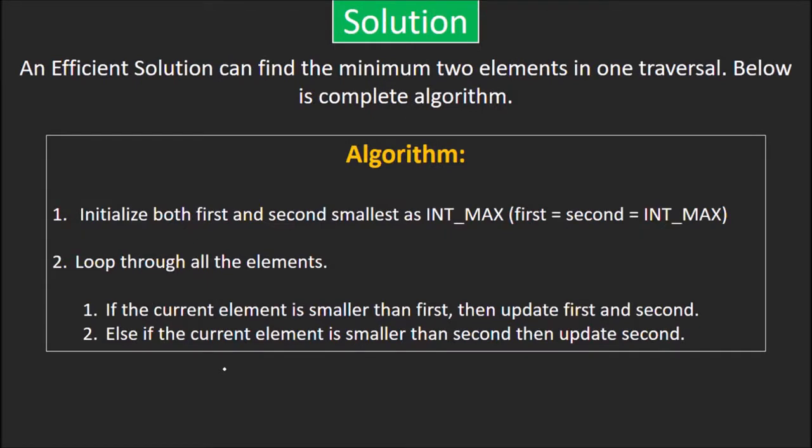The simplest approach would be to sort the array in increasing order. The first two elements in the sorted array would be the smallest two elements. Time complexity of this solution is O(n log n), but a better solution is to find the minimum two elements in a single traversal of the array.